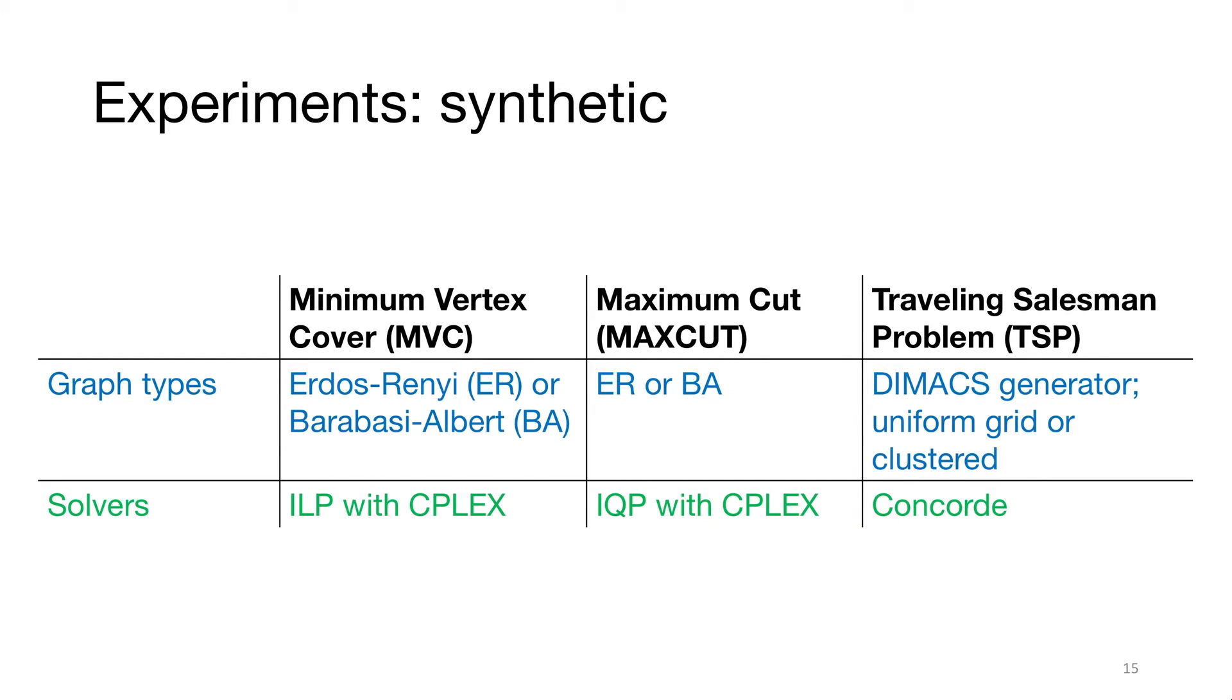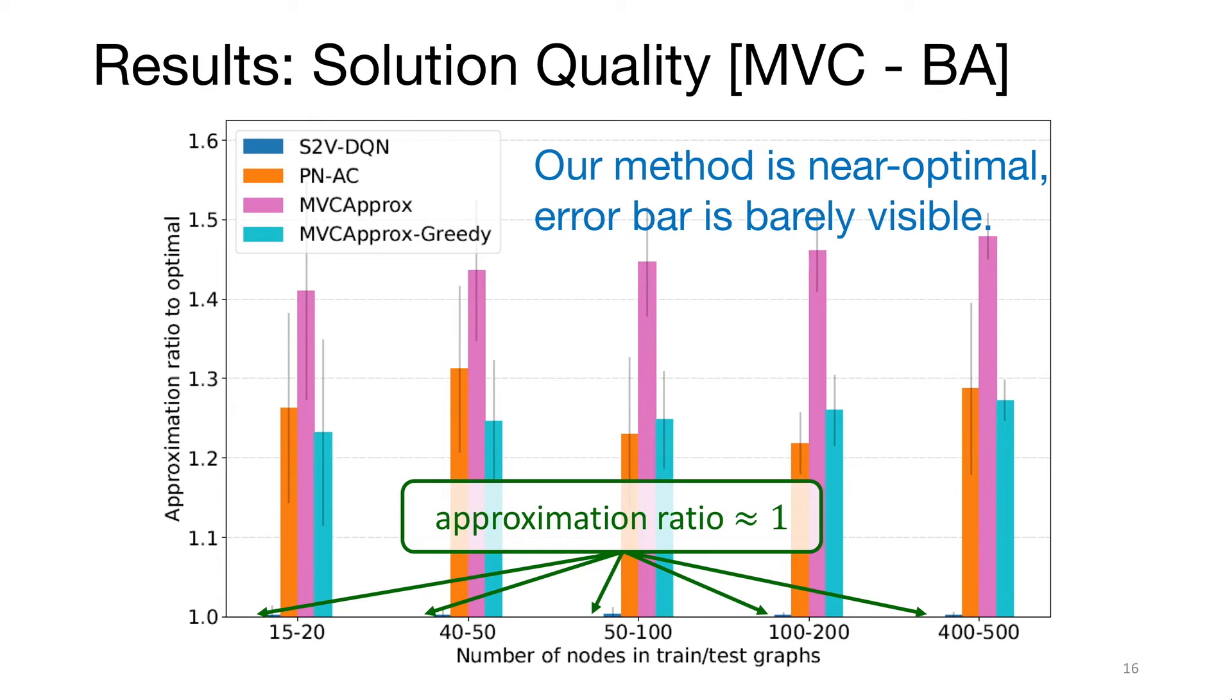In experiment, we first present results on synthetic data with random graphs. We compare with heuristics, approximations, and pointer network actor critic.